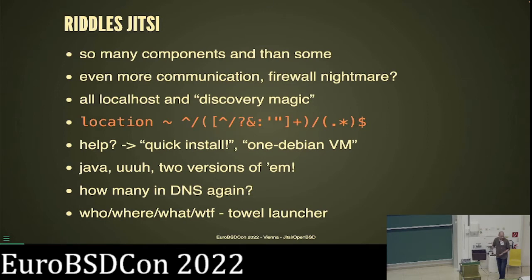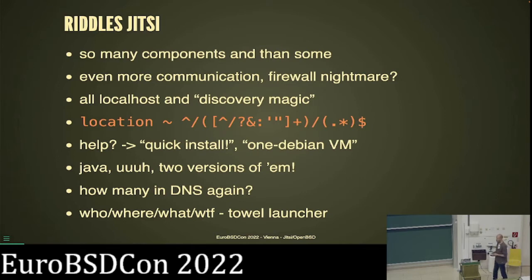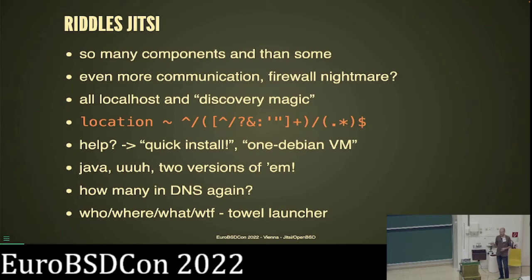I have not found one single firewall configuration example. Every component has two or three ports to communicate with, and you might have to open them in a firewall — but which side is internal communication and which is external? The Nginx configuration from the official documentation has location matches using extended regex, and the next line is just 'rewrite to slash break' — do nothing and go home. Why the complex matching? If you reach out for help on community.jitsi.org, the most likely answer is 'use the quick install': one single Debian VM with all components, and hopefully it works. If not, try again, restart.